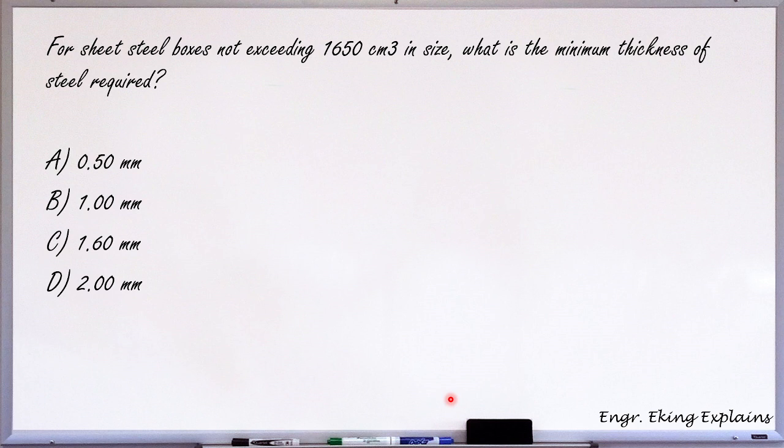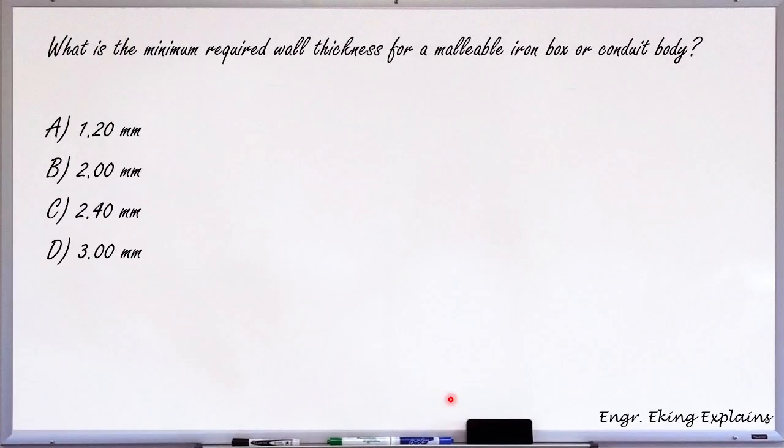for sheet metal boxes not exceeding 1650 cubic centimeter in size, what is the minimum thickness of the steel required for the construction of such sheet steel boxes? Okay, so the correct answer is letter C, 1.6 mm. Okay,